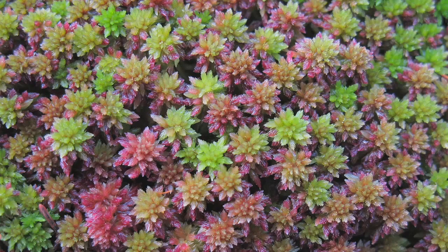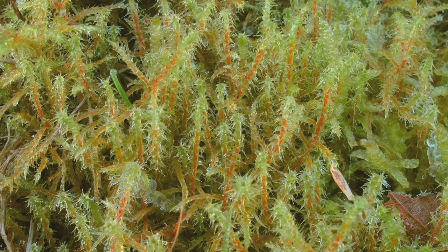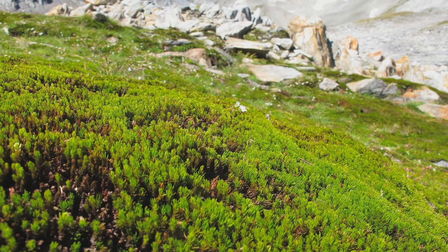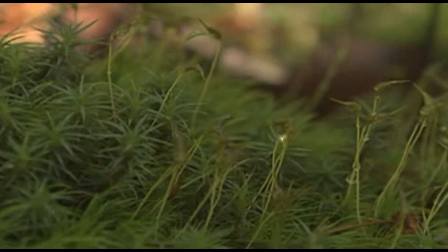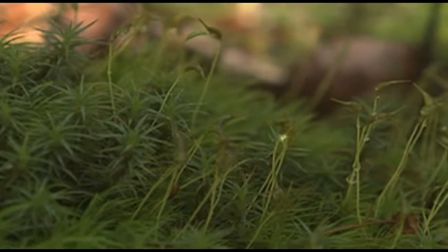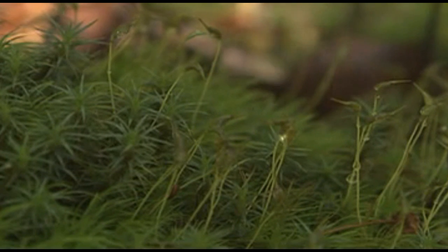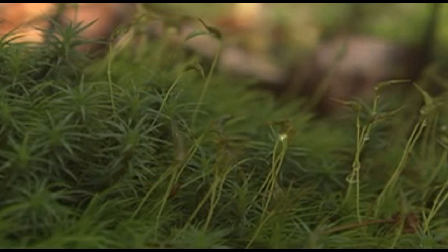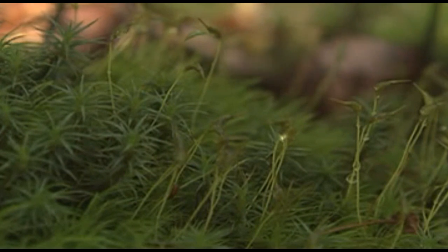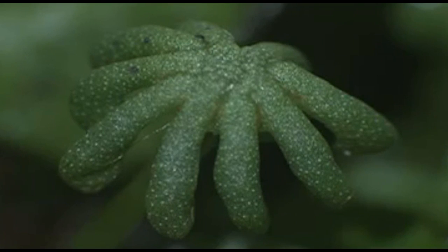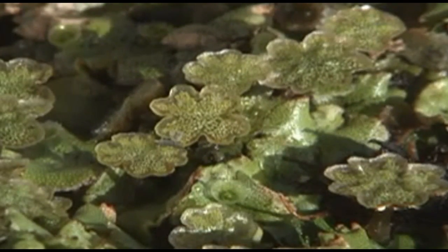Bryophytes have adapted reproductively to terrestrial environments by evolving two structures that prevent their eggs and sperm from drying out. The archegonia, in which eggs are fertilized and developed, and the antheridia, in which sperm are formed.